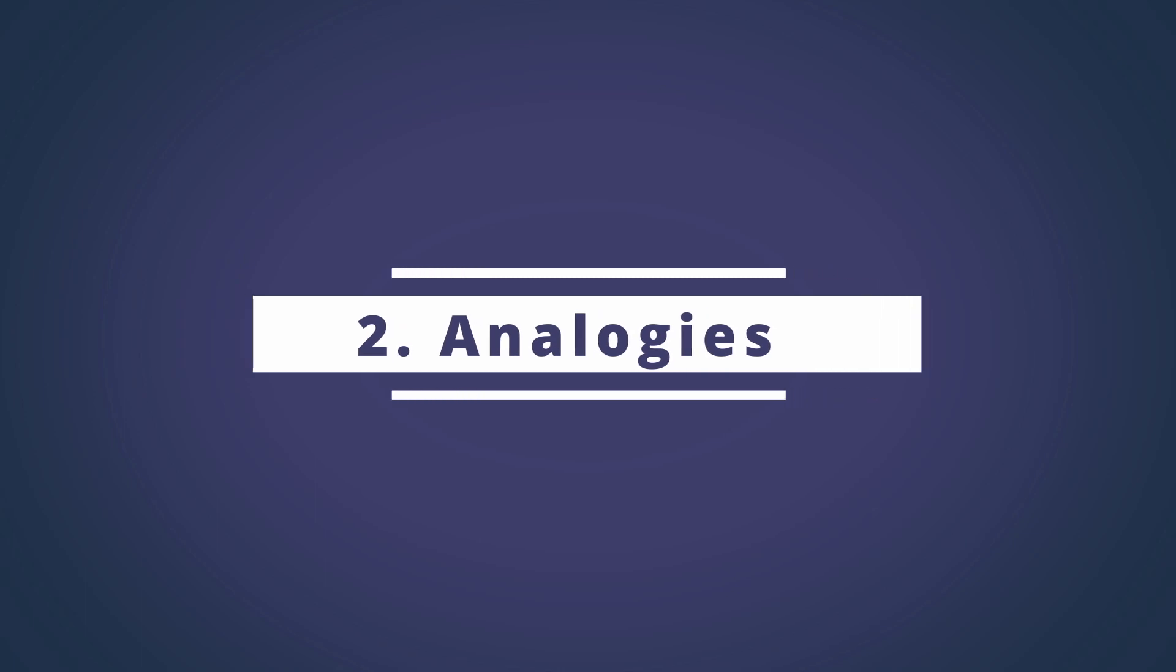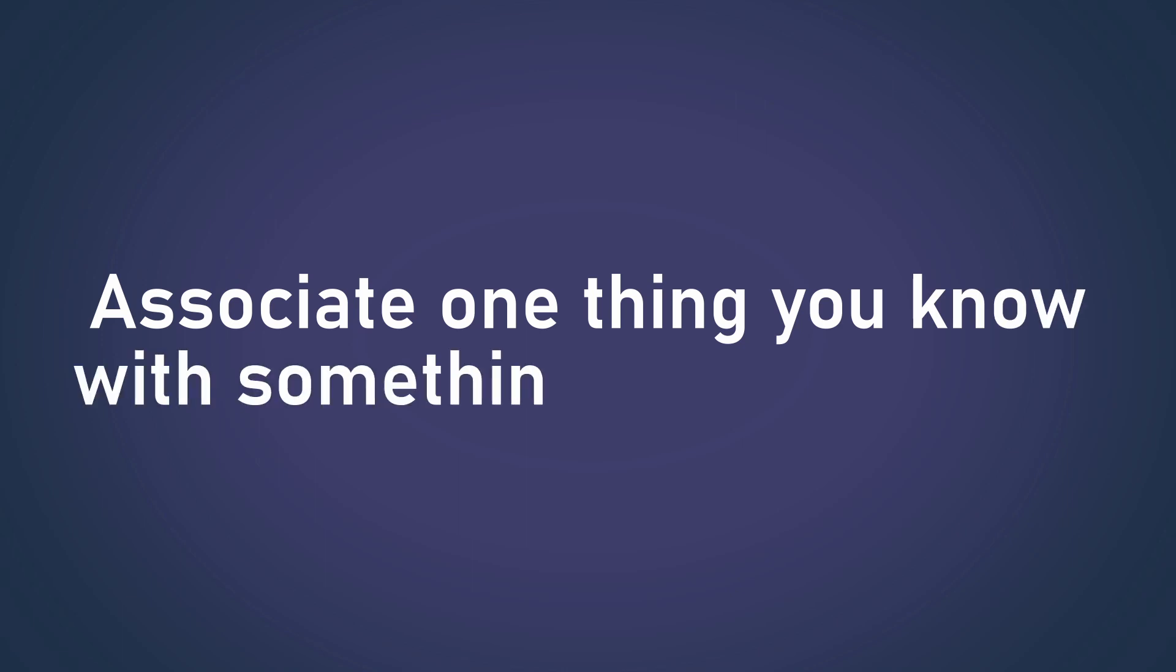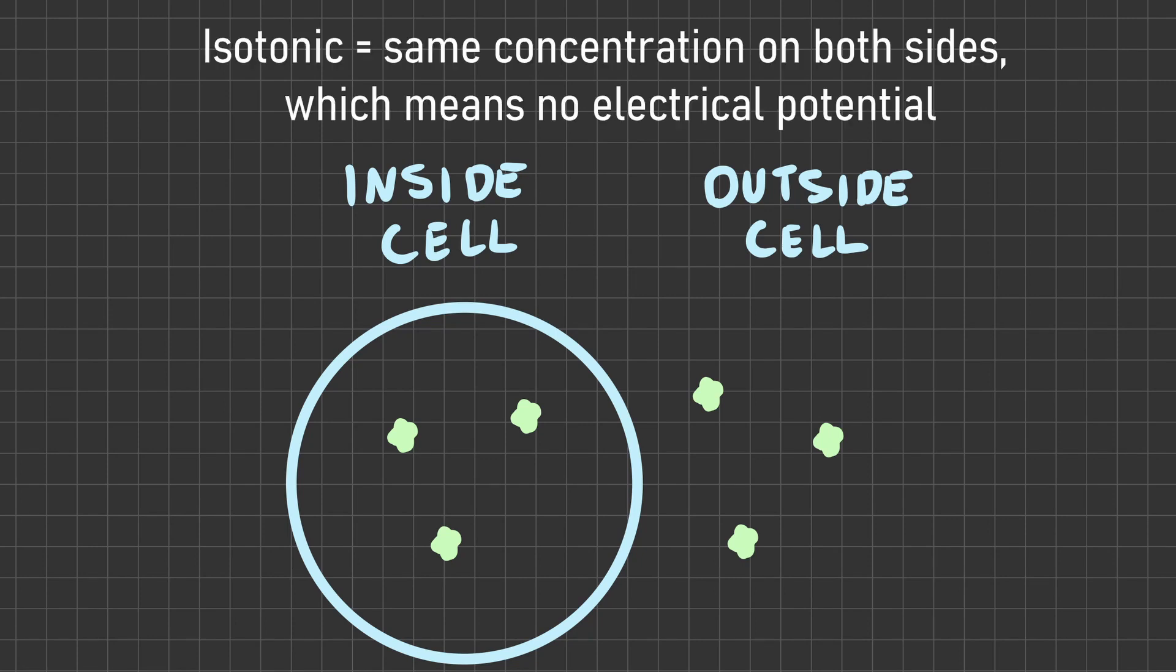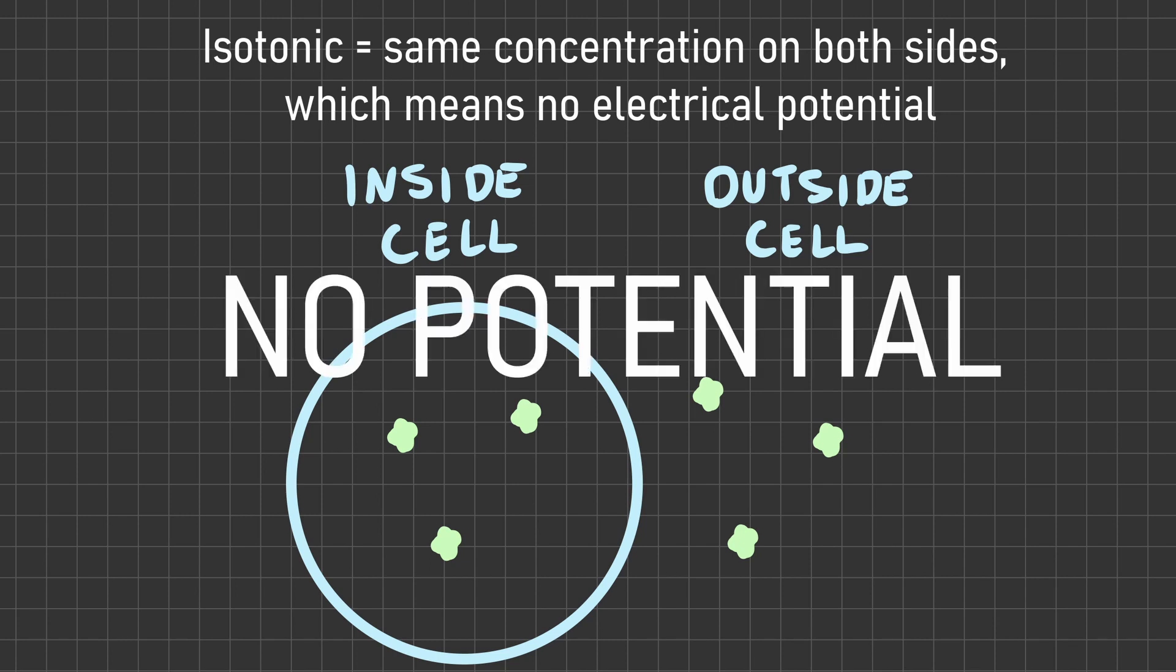Next are analogies. And you could also say figurative language or stories. But basically you want to associate one thing that you know very well with something that you don't. For example, a concept that we learn in biology is isotonic solutions. And this just means that the concentration of a particular thing is the same on both sides. And this results in there being no electrical potential on either side. So to remember or understand this, I just thought of my friend's Tinder profile because that too has no potential.